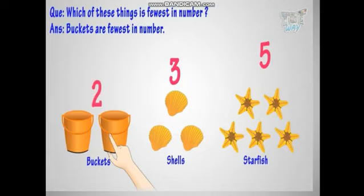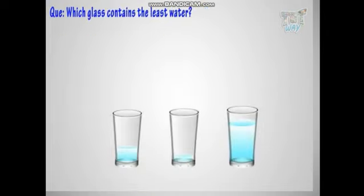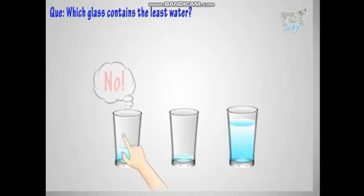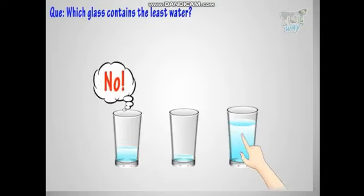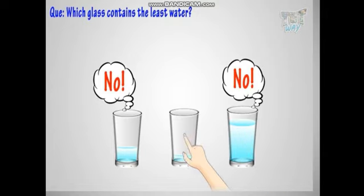Now, let's take another example. Which glass contains the least water? This glass? No! This glass? No! This glass? No! This glass? Yeah! This glass contains the least water.